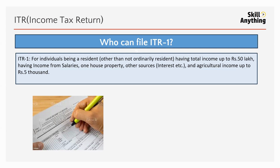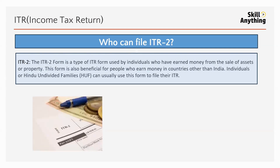Who can file ITR-1? An individual can file ITR-1 if they have income from salaries, one house property, or other sources like interest or FD, and their total income is up to 50 lakh. ITR-1 is filed by a resident person — not a non-ordinary resident — and agriculture income up to 5,000 is allowed.